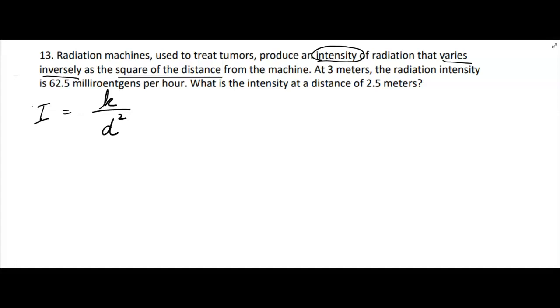That's the varies inversely, K over what? Inversely as the square of the distance. So we're going to put distance squared - the square, not the square root, the square of the distance from the machine. So there's our formula that describes the relationship. Now we're going to find K at 3 meters.